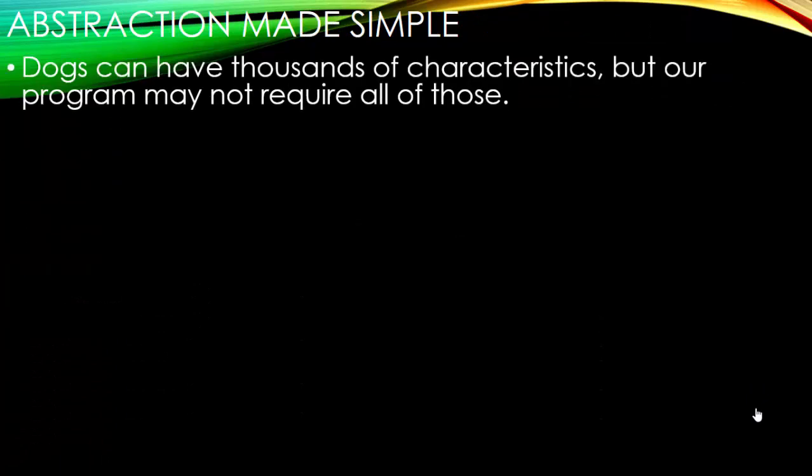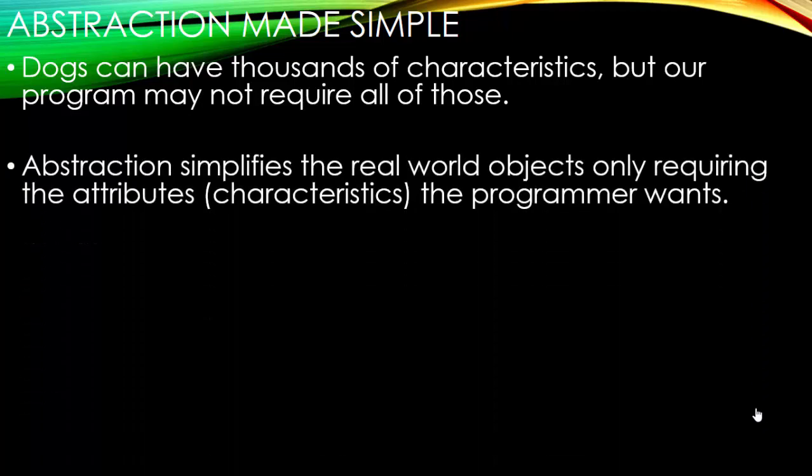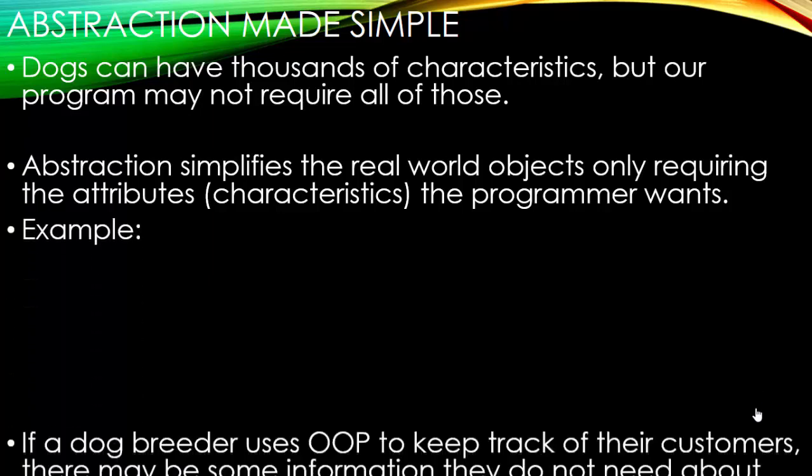Well, dogs can have thousands of characteristics, but our program may not require all of those. Abstraction simplifies the real-world objects, only requiring the attributes or characteristics that the programmer wants. Here's an example.